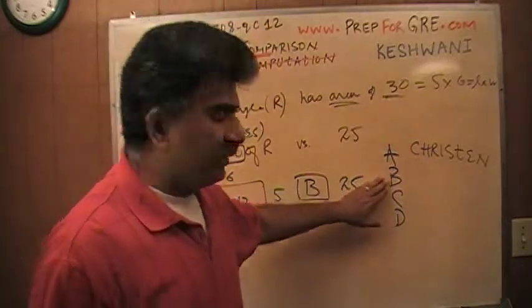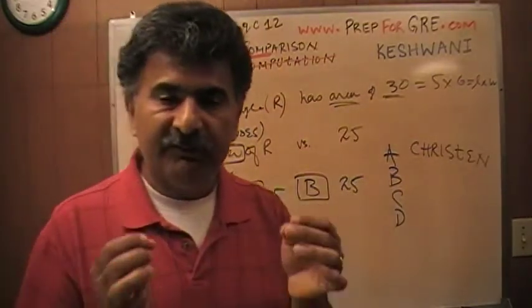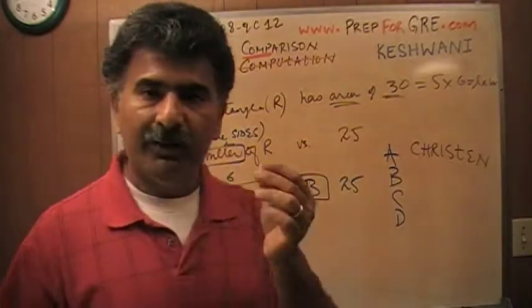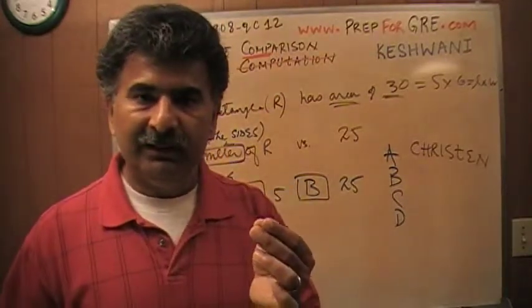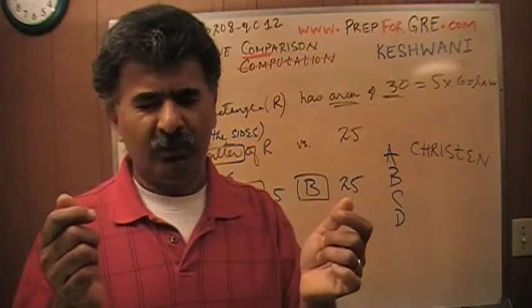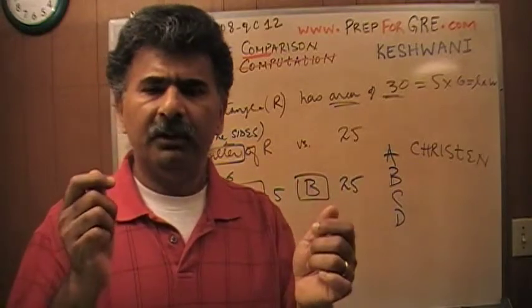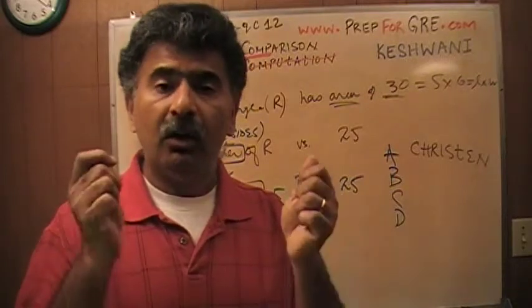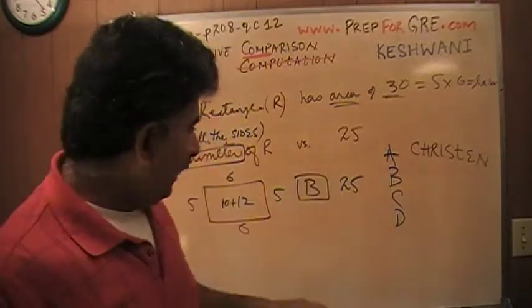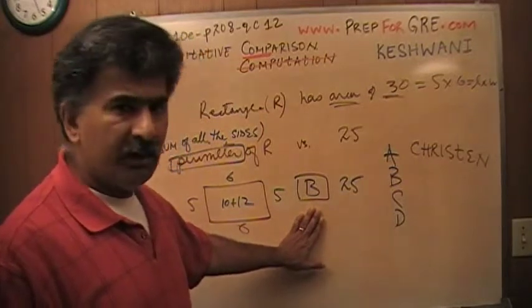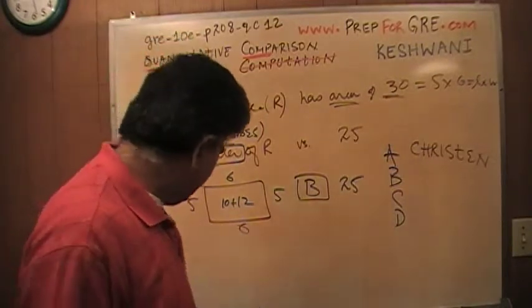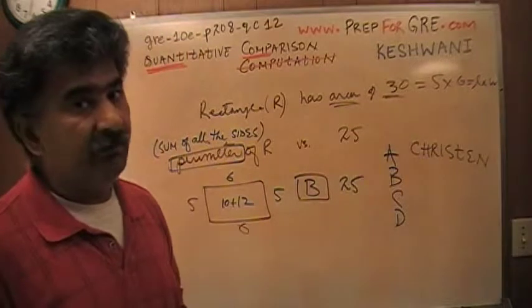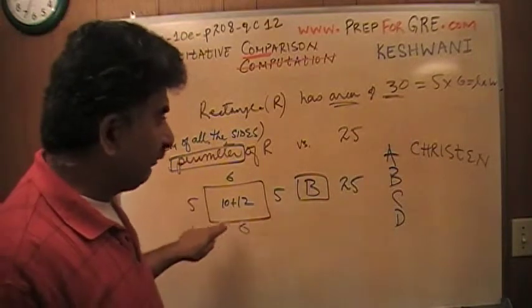When you pick B for the answer choice, what you're claiming is that the quantity in column B is always greater. When you pick C for the answer, what you're claiming is that the two quantities in the two columns are always equal. I have found here a situation where quantity in column B is bigger. What it tells me is not what the answer is but rather what the answer is not.